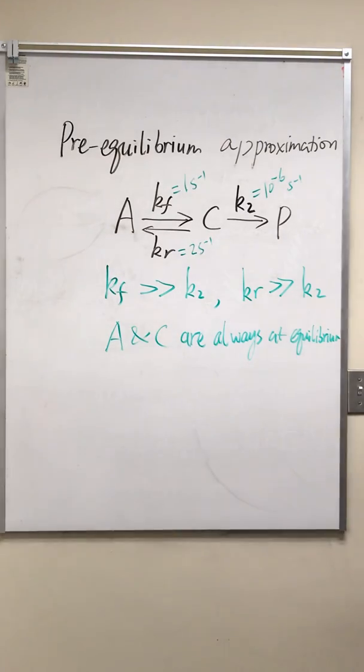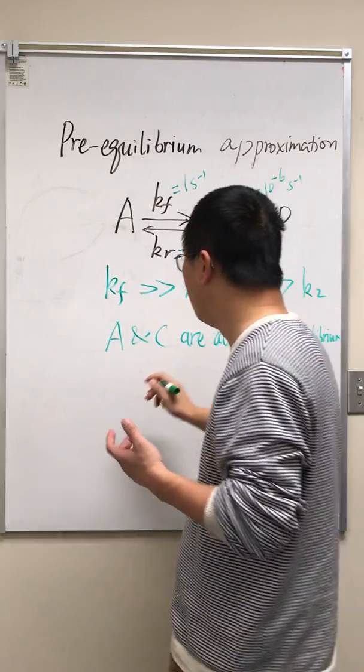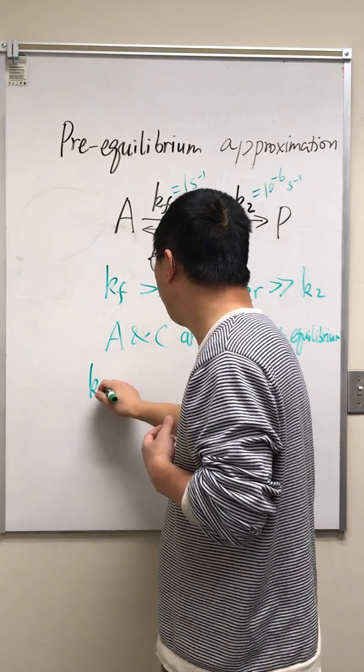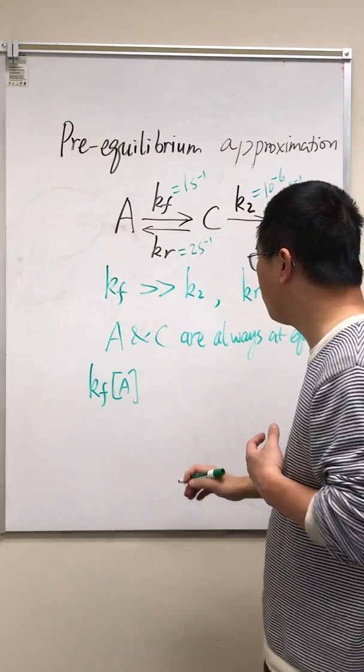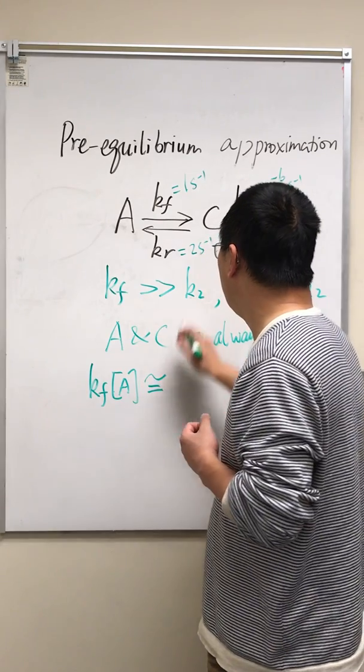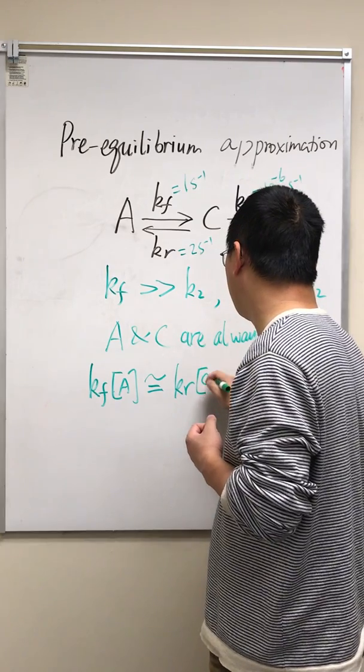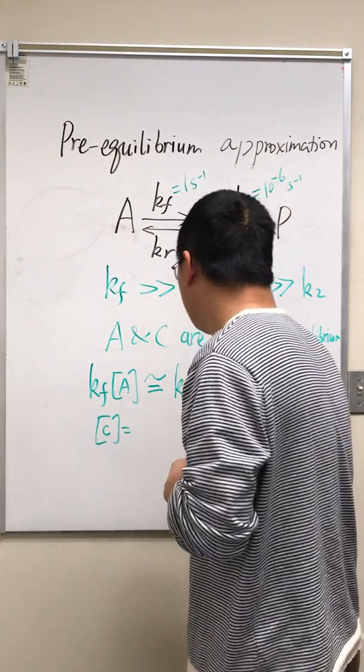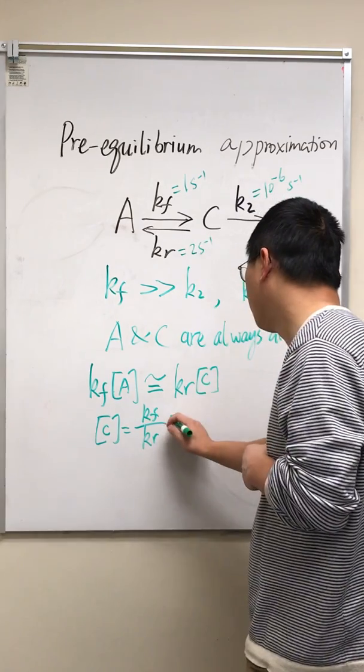And we can use this pre-equilibrium approximation to just assume that KF times A, that's how fast this A to C reaction is, is equal to KR times C. And therefore we have C is equal to KF over KR times A.